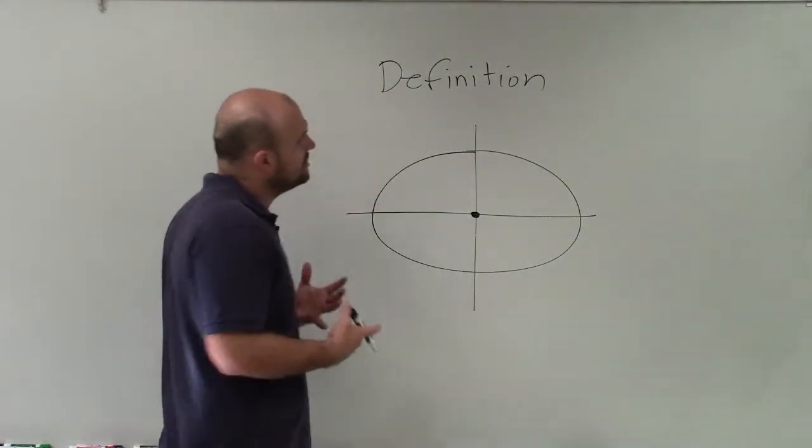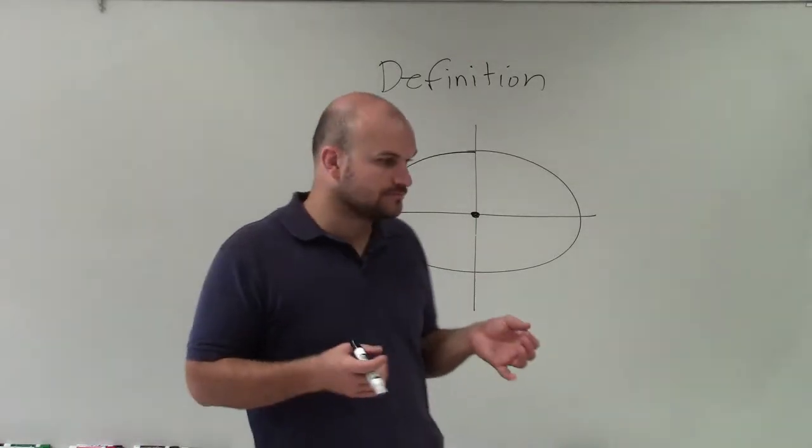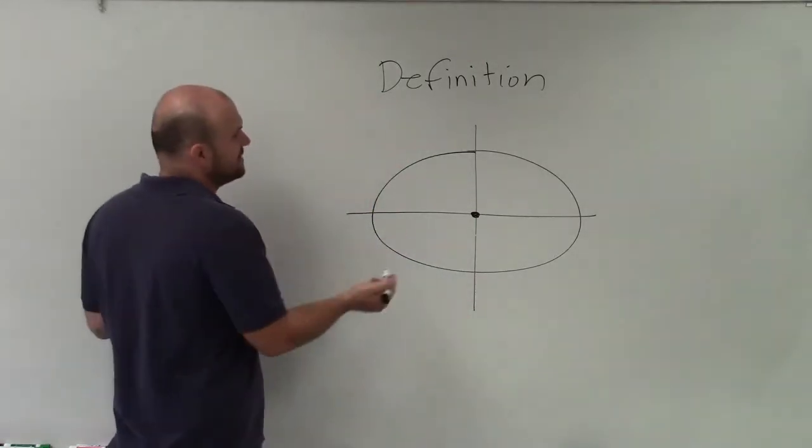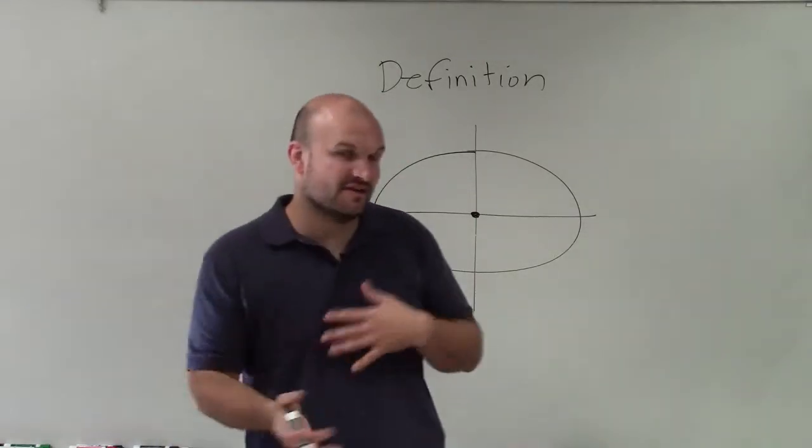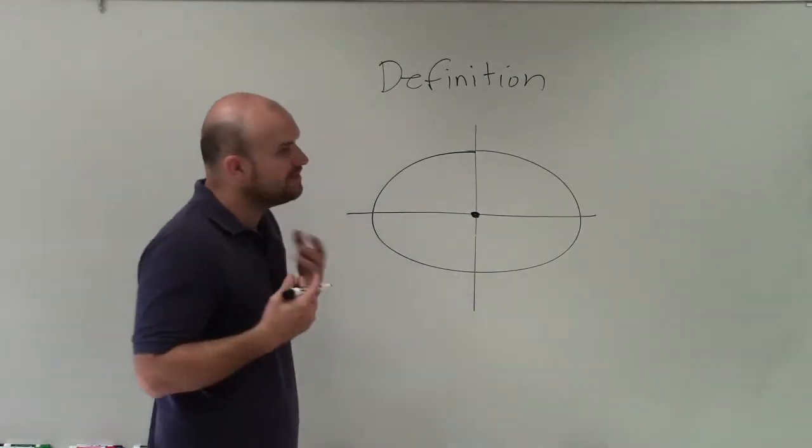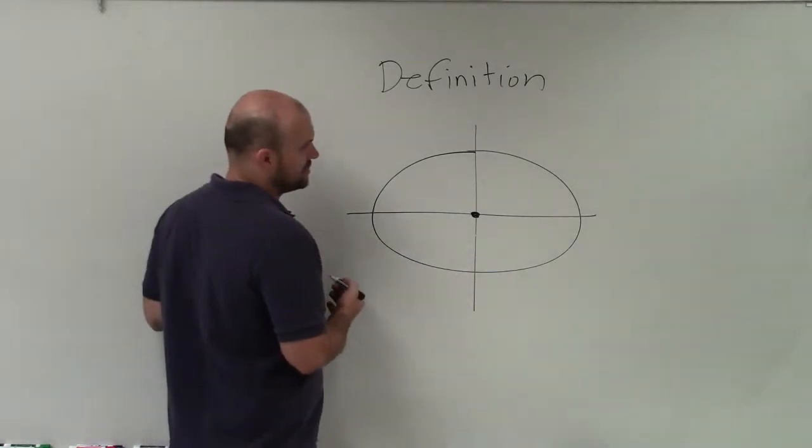Now when we're looking at the definition of an ellipse, that is very similar to the one of a circle, but it gets a little bit more specific.